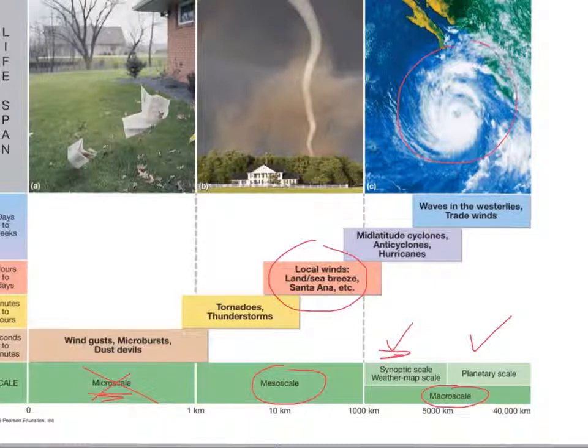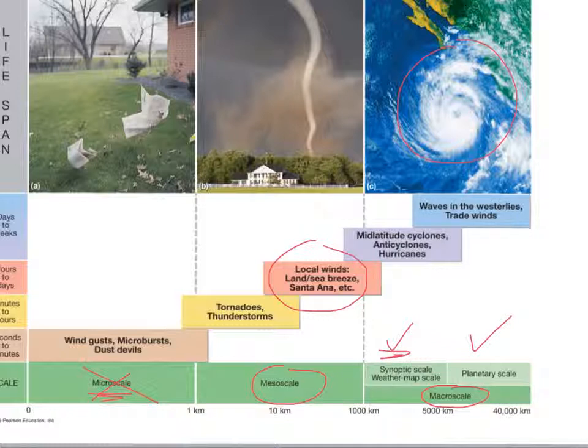This is an example of a macroscale wind event. It looks like a tropical cyclone or a hurricane. And then also in this chapter, actually hurricanes are a chapter down the road. But in this chapter, we're going to talk about prevailing winds, bands of winds that encircle the Earth on a planetary scale. So that's like way cool.